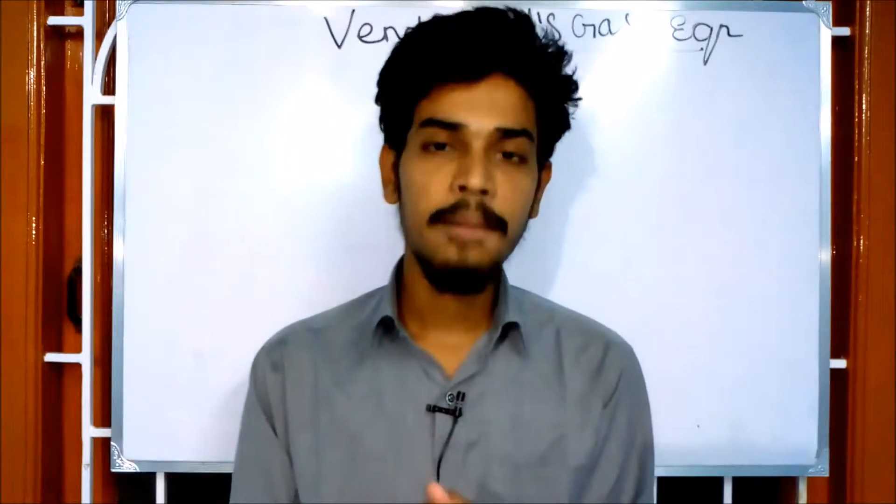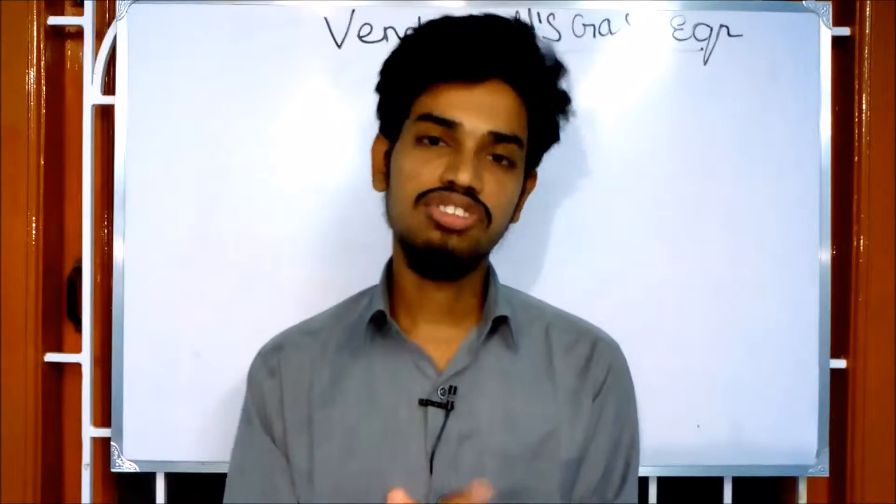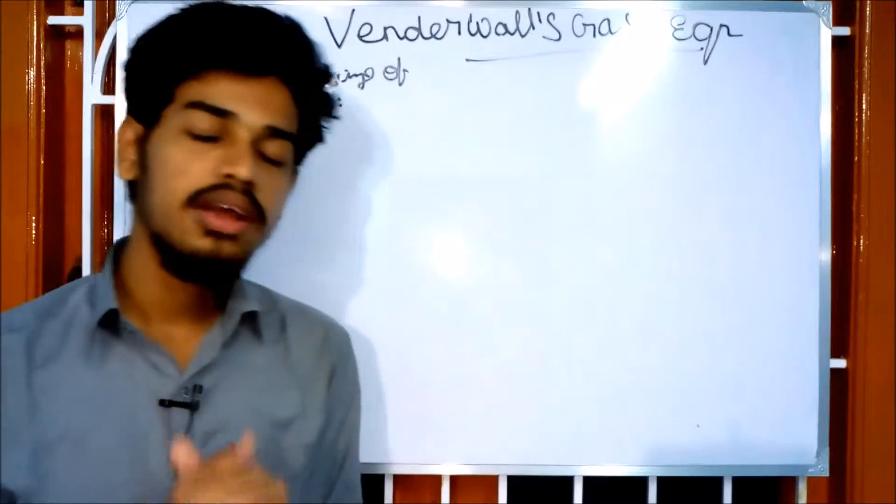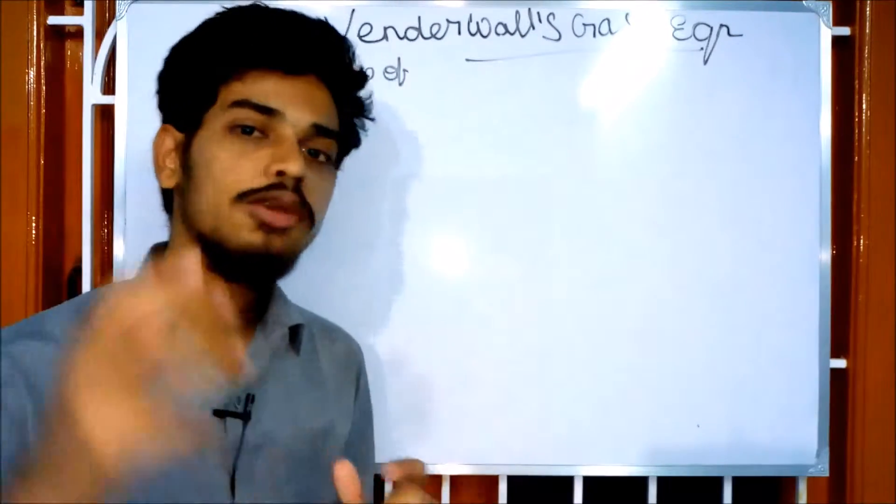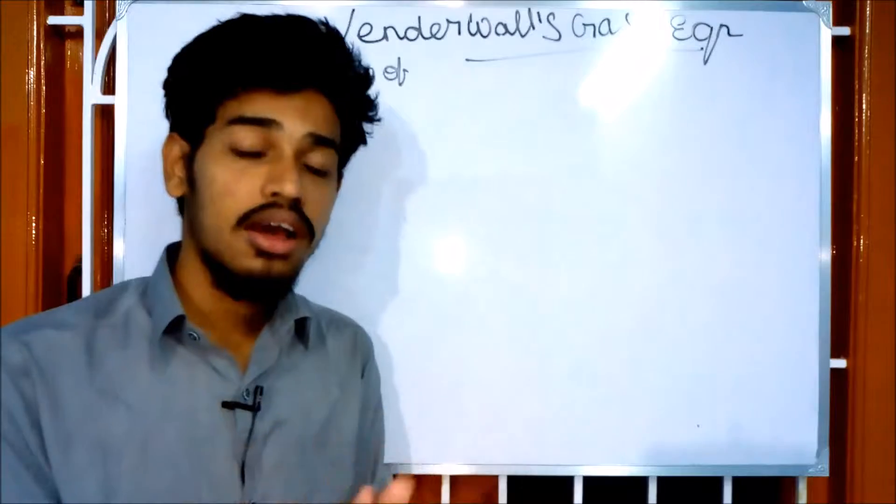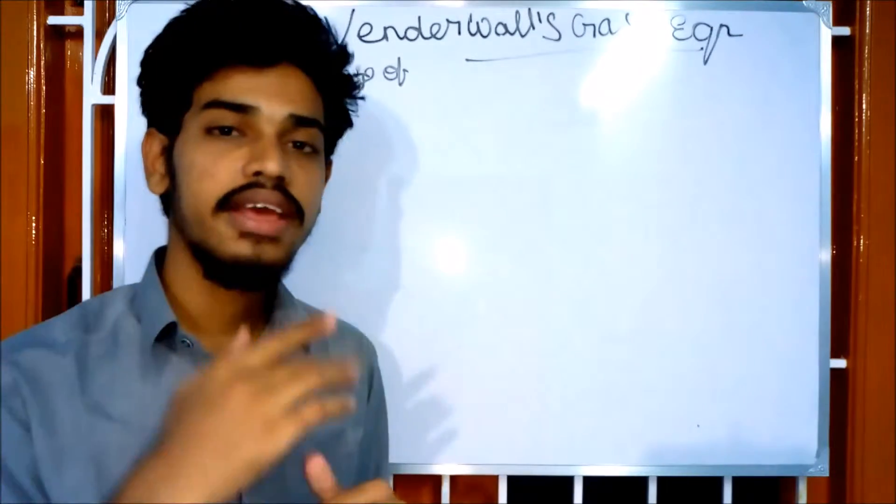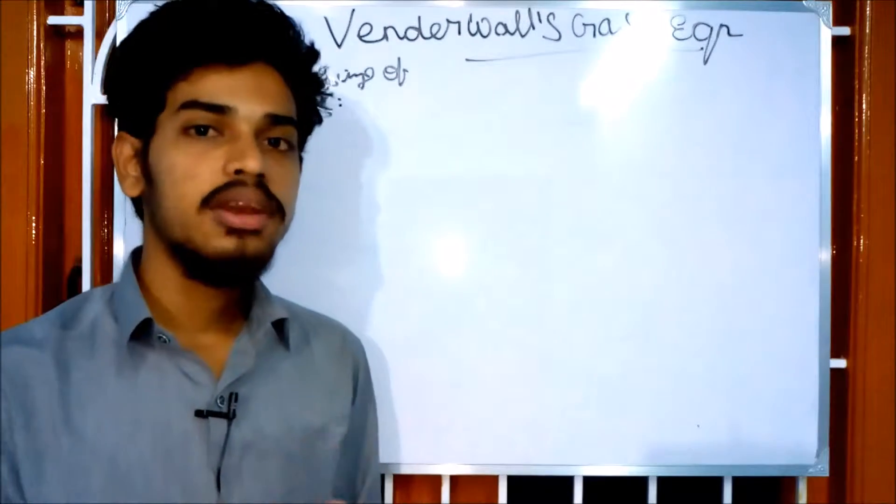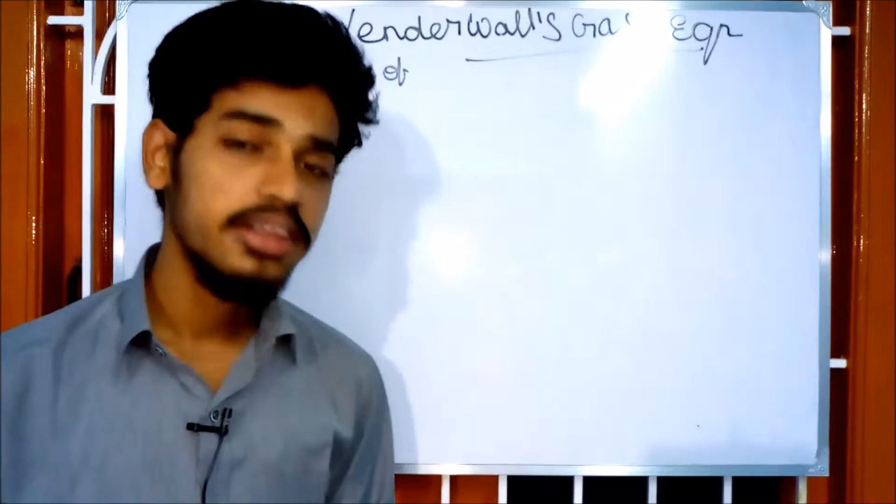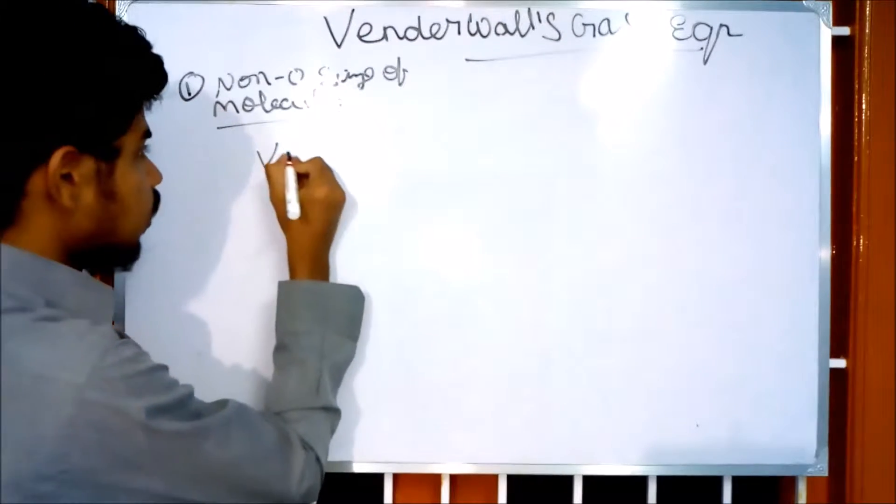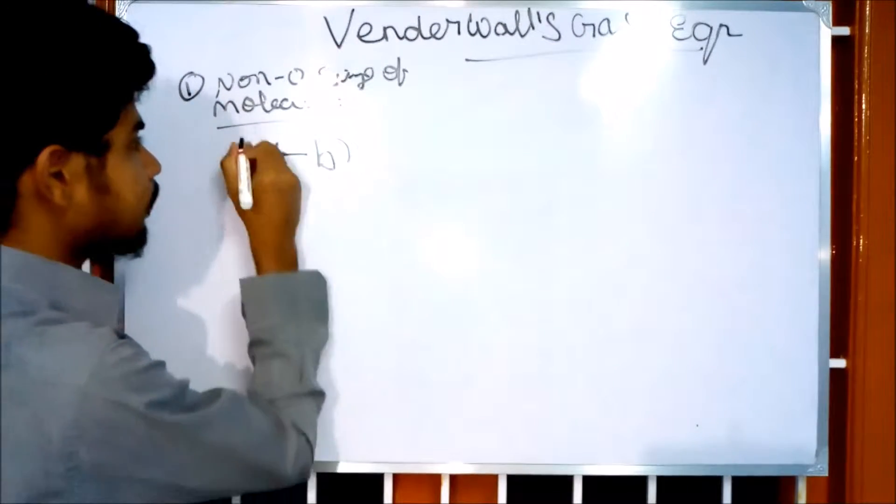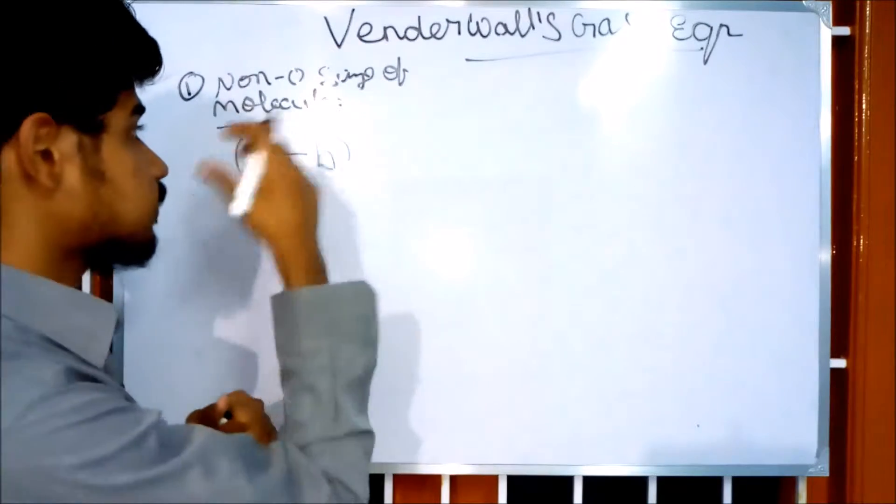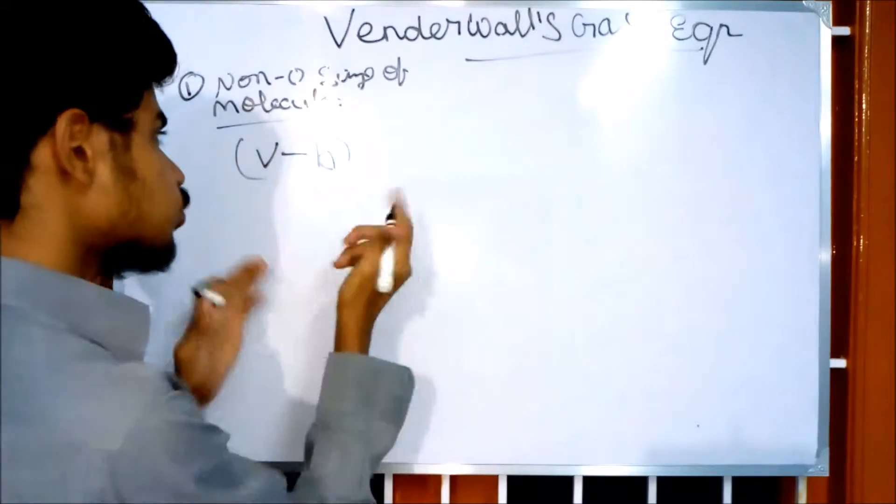The Van der Waals Gas Equation has two types of corrections. First, if molecules have non-zero size, you need to account for volume. When you add gas, there will be a volume deficiency. For the volume correction, we use volume minus b, accounting for the non-zero size of molecules.